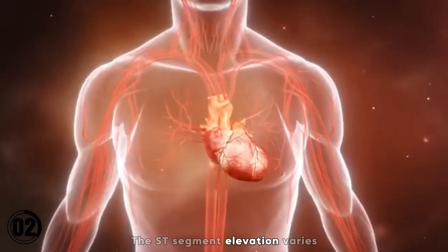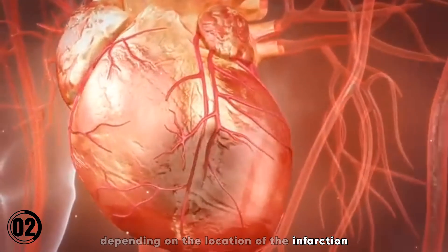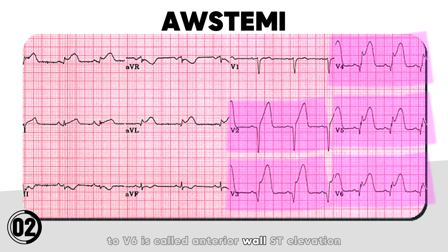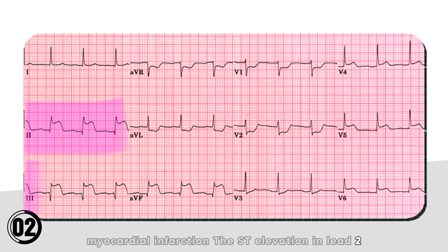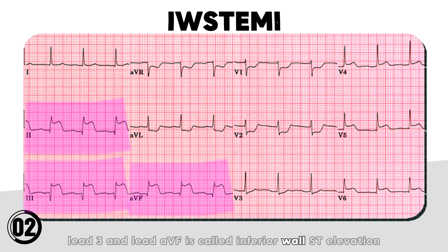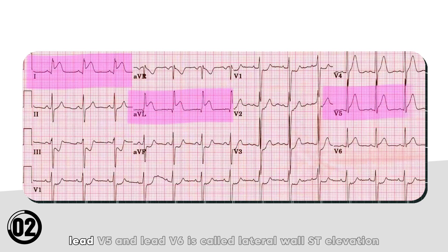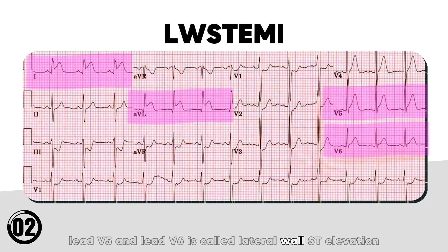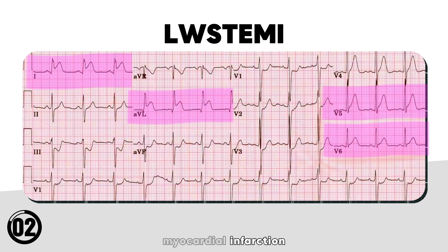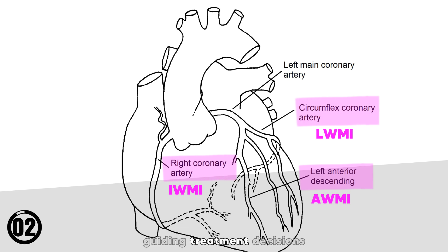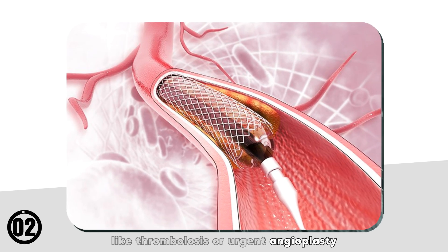ST segment elevation varies depending on the location of the infarction. ST elevation in leads V1 to V6 is called anterior wall ST elevation myocardial infarction. ST elevation in leads II, III, and aVF is called inferior wall ST elevation myocardial infarction. And ST elevation in leads I, aVL, V5, and V6 is called lateral wall ST elevation myocardial infarction. These patterns help pinpoint which artery is blocked, guiding treatment decisions like thrombolysis or urgent angioplasty.